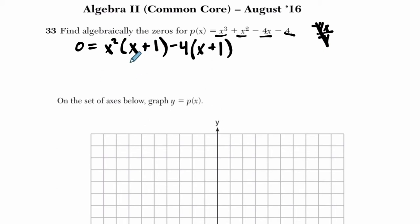Now, what I have is common factor. I have x plus one, that could be factored out, and what's left is x squared minus four.